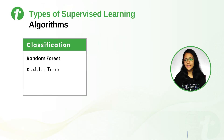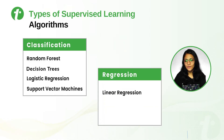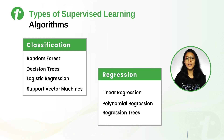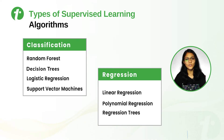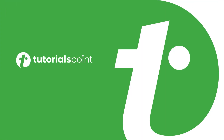Random forest, decision tree, logistic regression, and support vector machines are algorithms that fall under classification. Linear regression, polynomial regression, and regression trees are algorithms that fall under regression. We are going to discuss all these algorithms in detail in further videos, so stay tuned with Tutorials Point.